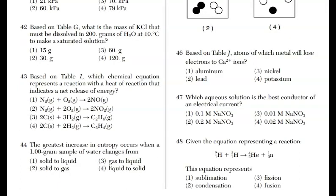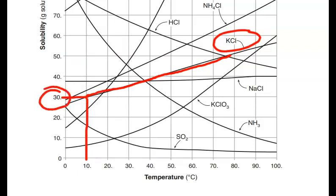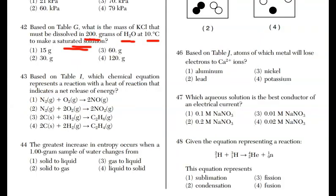It looks like we're going to the reference table again here in 42 based on table G. What is the mass of KCl that must be dissolved in 200 grams of water at 10 degrees to make a saturated solution? We're looking at the solubility graph. We're looking for KCl. It's 200 grams of water. On the y-axis, you're going to see it says 100 grams. We want to know how much is going to fit in 200 grams of water at 10 degrees. On the line, remember, it's saturated. So, I got to find the KCl line. It crosses here at 10 degrees and it looks to be at 30. But remember, that's in 100 grams of water. Check out that y-axis. I got to double this. So, it's going to be 60 grams in 200. For 42, that makes the answer choice 3.